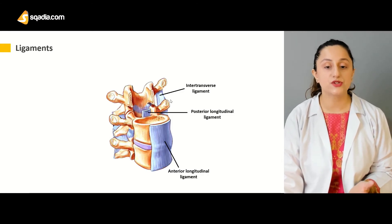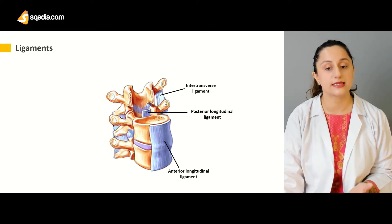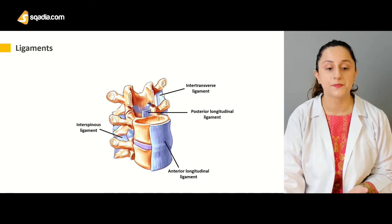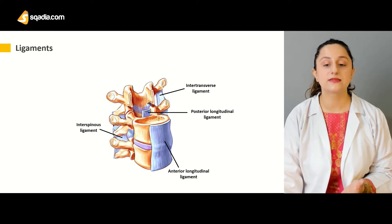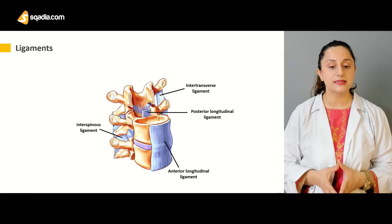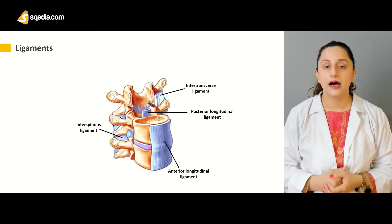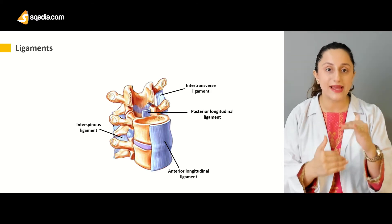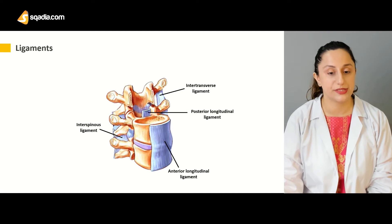Each of the transverse processes — the corresponding processes — are being attached by the intertransverse ligaments. And then we have the interspinous ligaments, as even the name is indicating. They are present between the two adjacent spines of the vertebras.